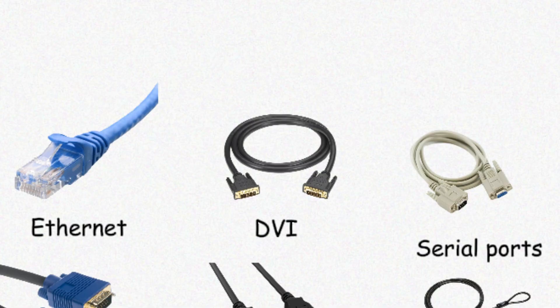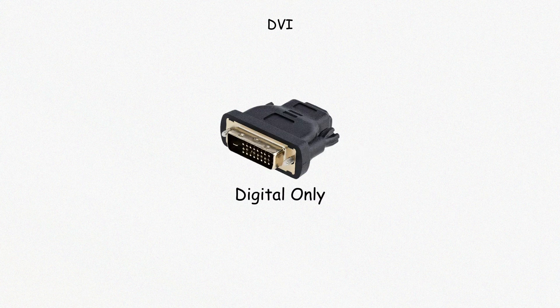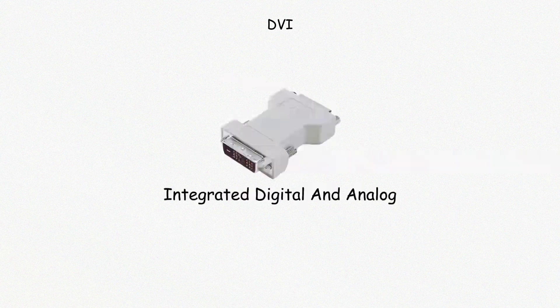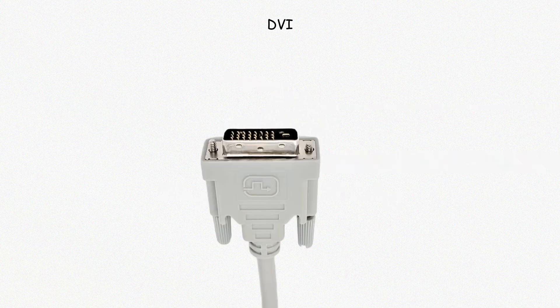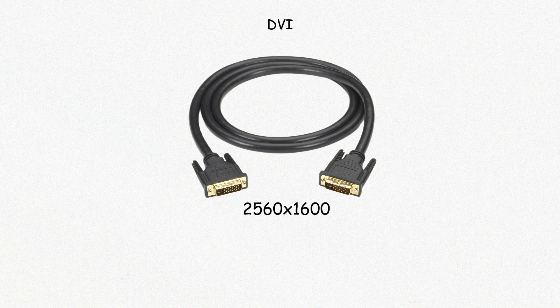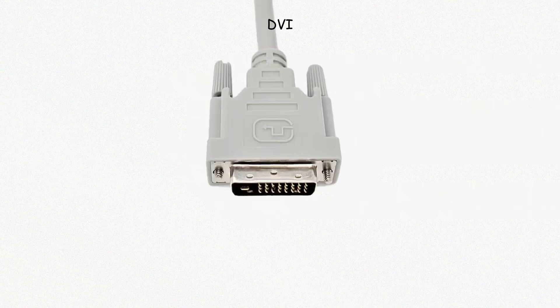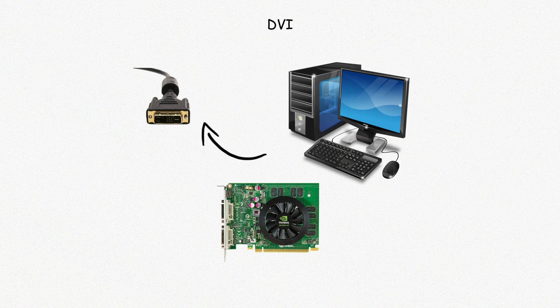DVI, or Digital Visual Interface, is another video port developed to improve on VGA. It comes in several types: DVI-D (Digital Only), DVI-A (Analog), and DVI-I (Integrated Digital and Analog). DVI supports higher resolutions and better image quality than VGA but does not carry audio, only video. Dual-link DVI supports resolutions up to 2560 by 1600. Like VGA, DVI has been mostly replaced by HDMI and DisplayPort, but can still be found on older monitors and graphics cards.